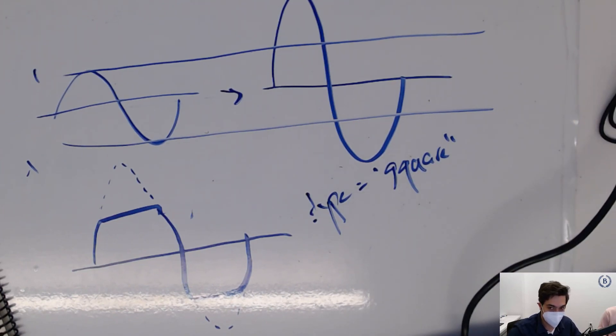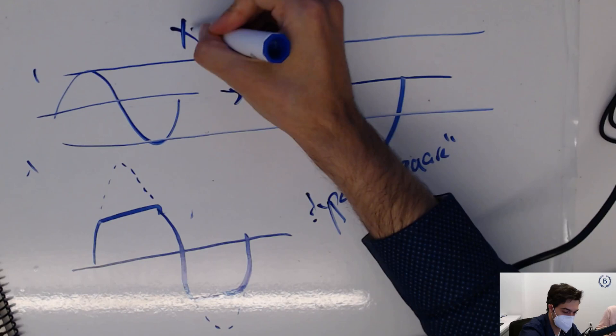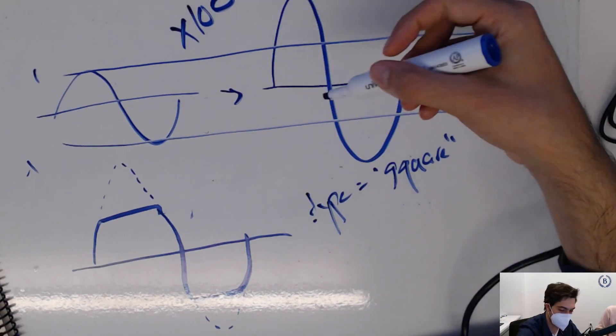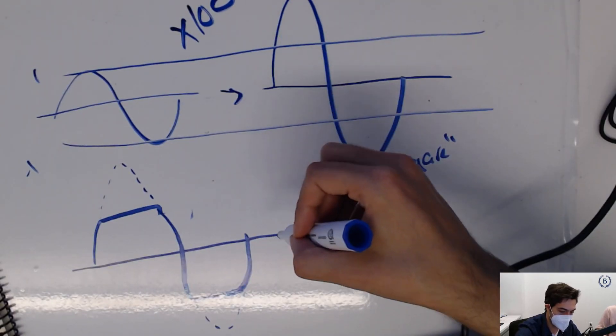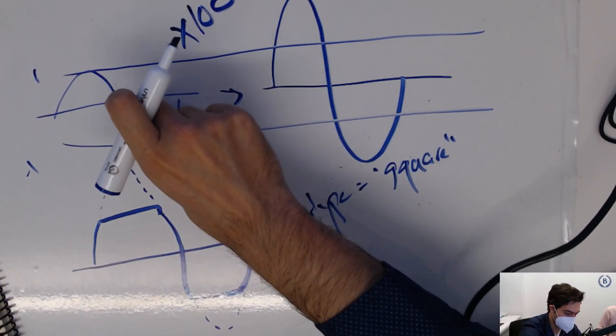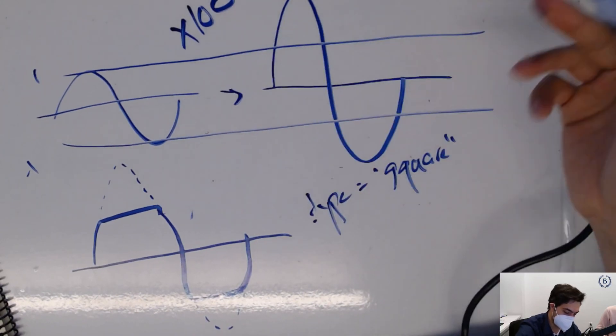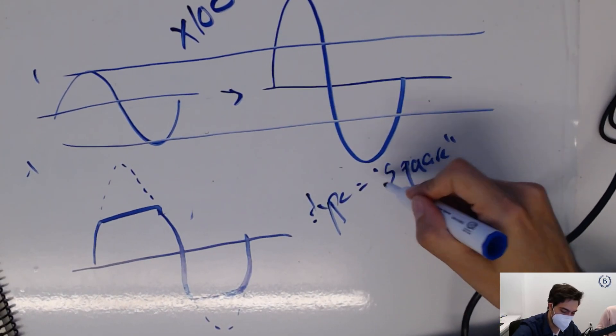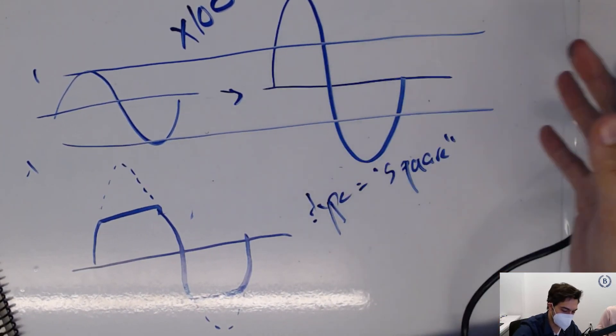This is like gain times a hundred, it doesn't matter, any big number, and then we clip. The point is though, this is how you make a square wave out of a sine wave. We don't need to go through all that work. We can just say I just want a square wave.